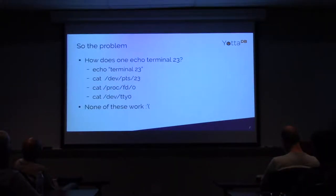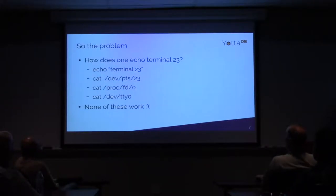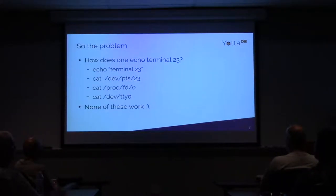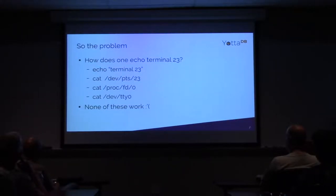Echoing Terminal 23 either means printing the literal string 'Terminal 23', but a security expert probably wouldn't care about that. More likely, he's trying to look at the pseudo-slave terminal — PTS 23. However, if you cat PTS 23, it screws up the user's terminal because half the input goes to them and half to you, so they know they're being watched. Looking at the slash proc slash file descriptor for the process also has that problem. None of these work cleanly.